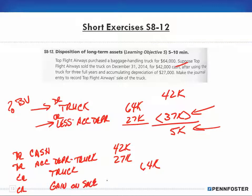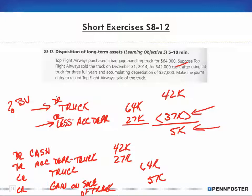We credit the truck account for sixty-four thousand to zero it out. Adding up debits and credits, the difference ends up being a credit — a gain on sale of truck for five thousand dollars. That's the journal entry to record selling the asset off your accounts. Know your purchase price, figure out book value, subtract one from the other to find gain or loss, then reverse those asset account balances to zero.